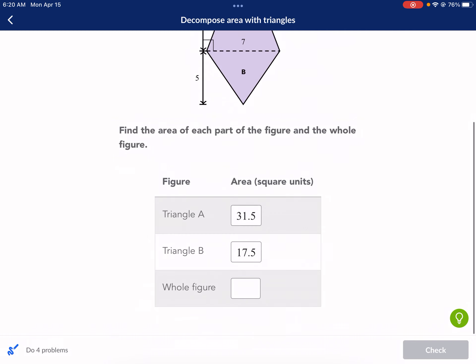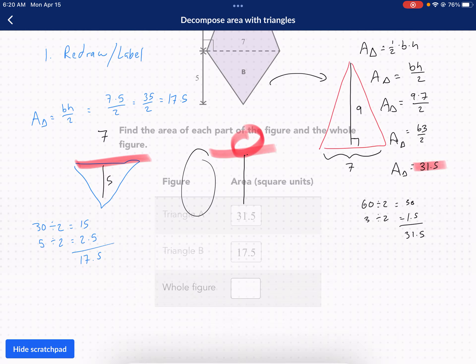And then the whole figure. When it says whole figure, it's just asking for the sum of both those. So, I need to do the 17.5 plus the 31.5. So, 31.5 plus 17.5. Yes, I know there's a lot of steps. It's not that bad though. I don't think the numbers are going to be any more difficult than .5.